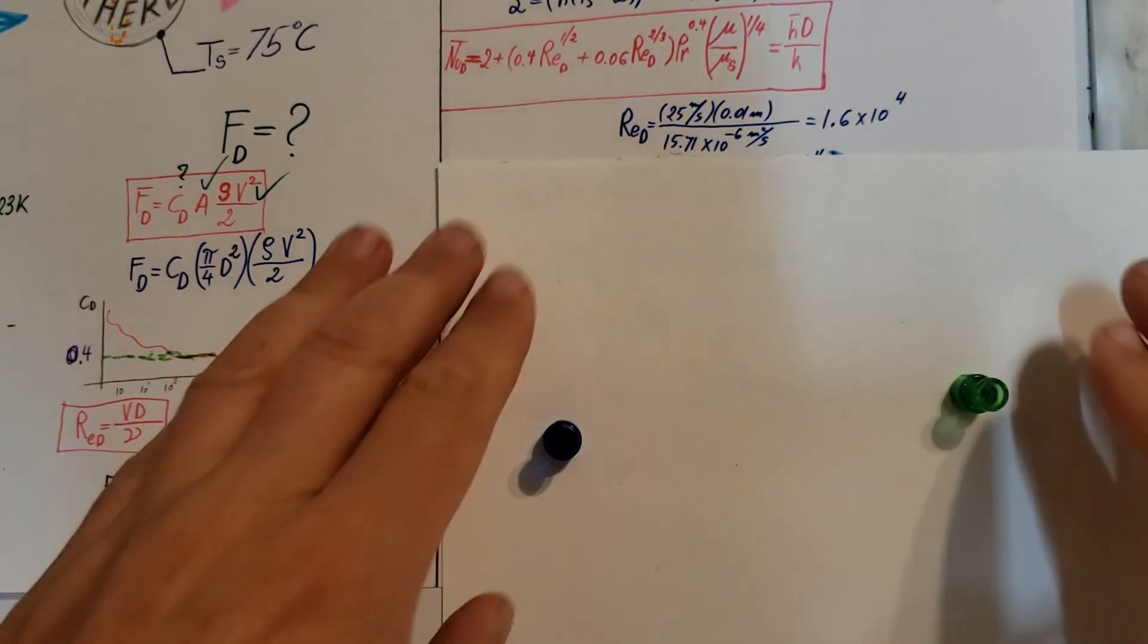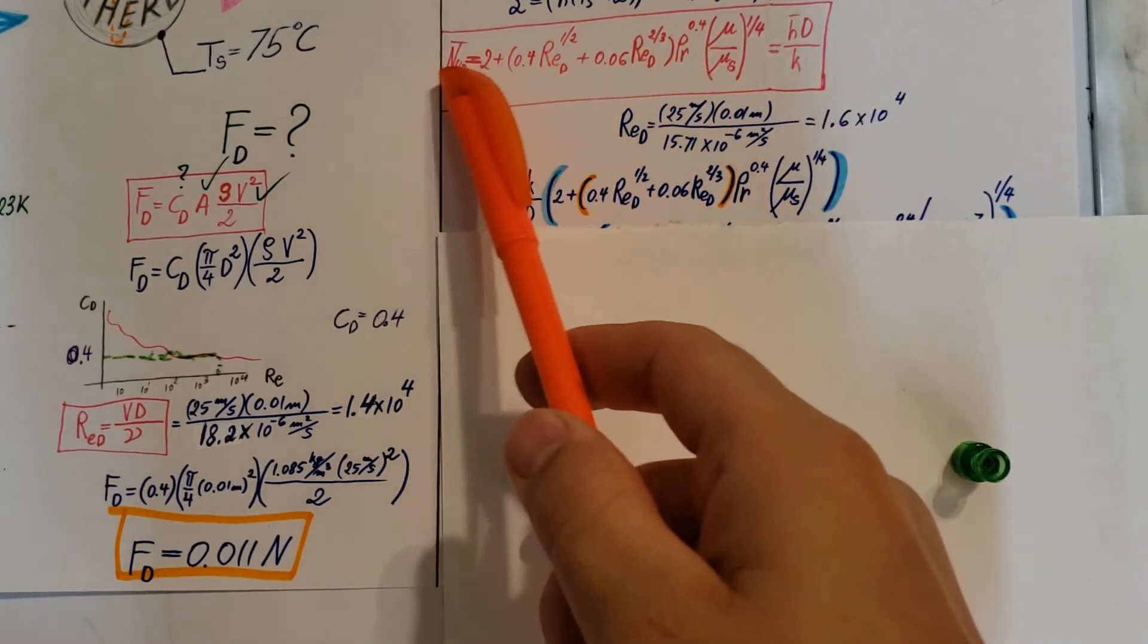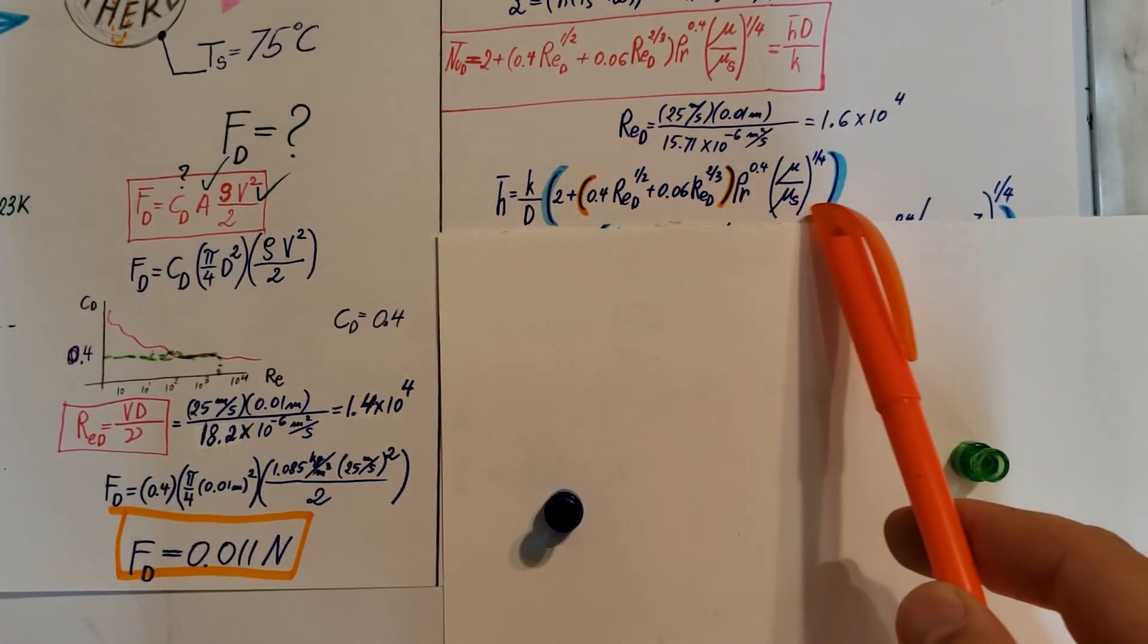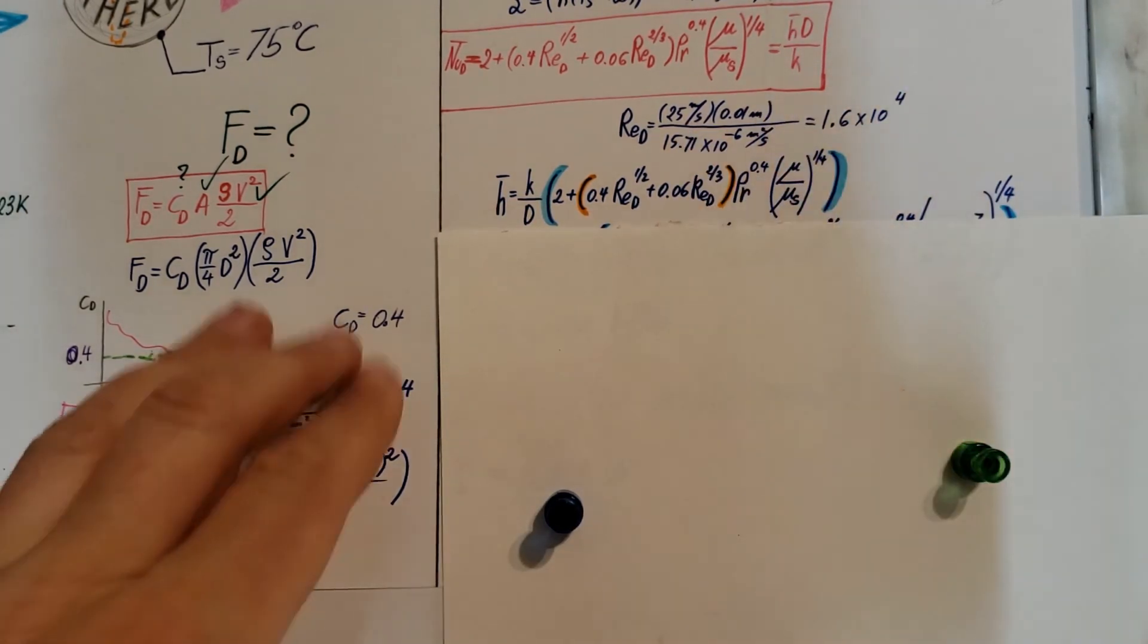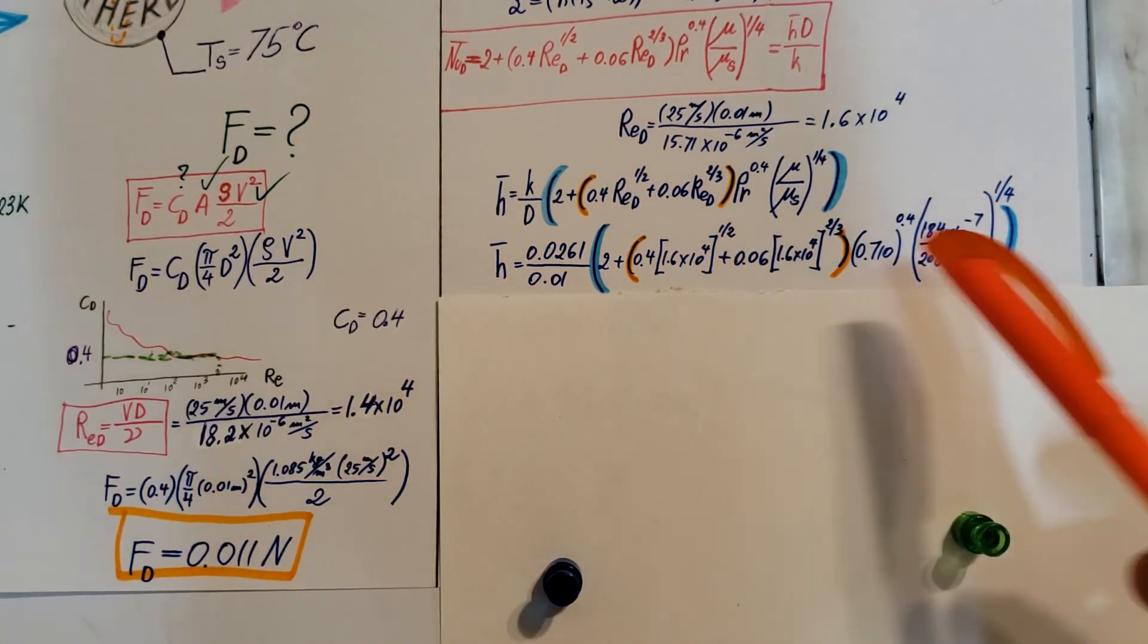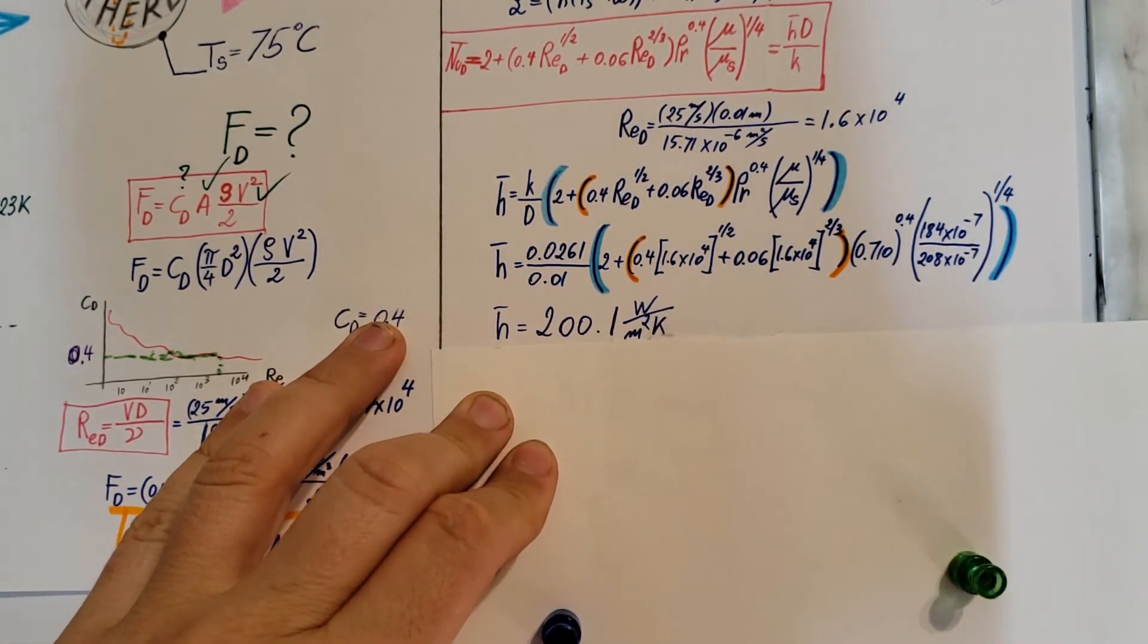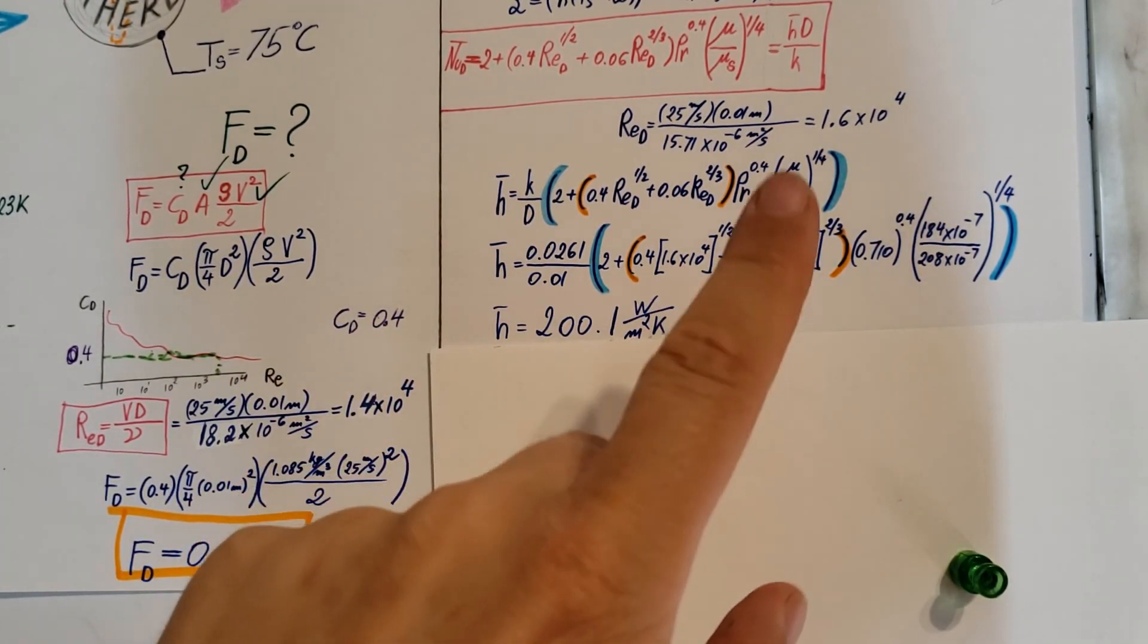Then we're going to use this large formula. I'm going to use this side and the middle part, I'm going to solve for h, that's what you see right here. Now we have everything, we just checked it, we found our properties, so we can go ahead and plug them in. I ignored all the units because this thing would be a mile long. So after we calculate this monster, we find that our h average is 200.1 watts per meter squared Kelvin.